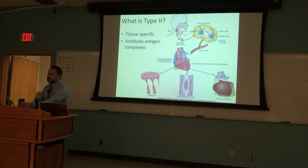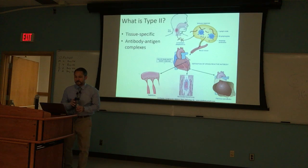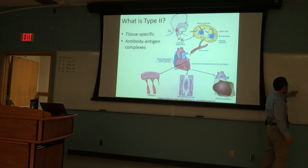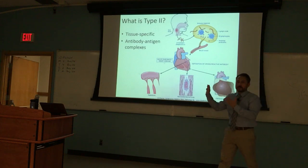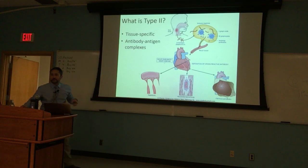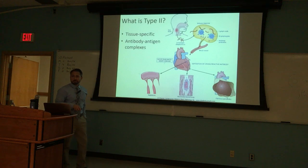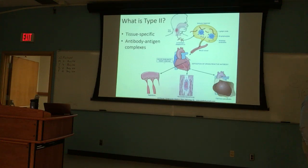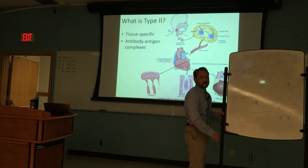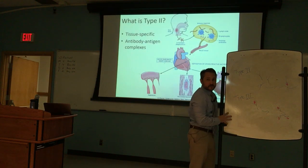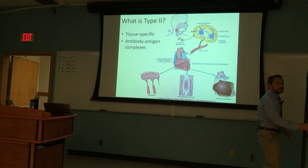Shifting gears to type 2 — type 2 is tissue-specific, or perhaps better called antigen-specific, because blood typing falls into it. You get an antigen-antibody complex, but this happens at the level of the tissue, not in circulation. The antibody finds the antigen bound up somewhere in a tissue.